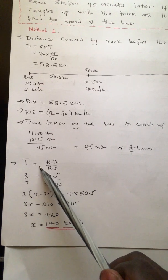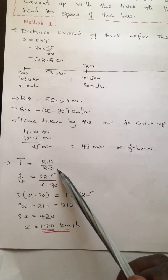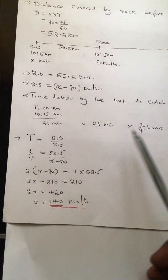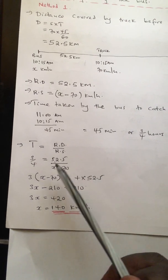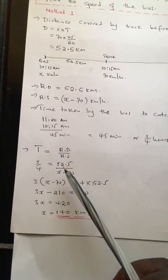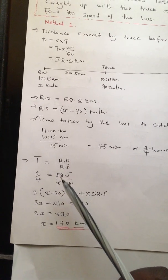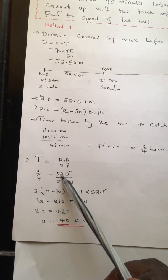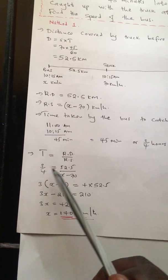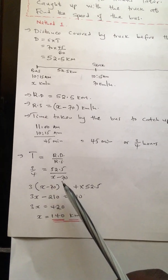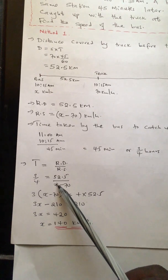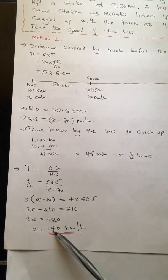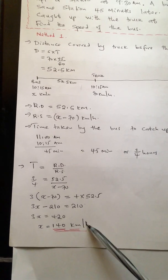Time always equals relative distance over relative speed. So: 3/4 = 52.5 divided by (x minus 70). Cross-multiplying and solving, you find that the value of x is 140 kilometers per hour.